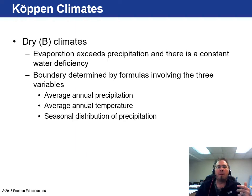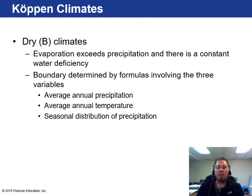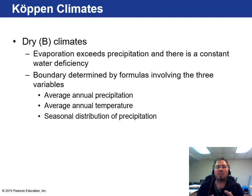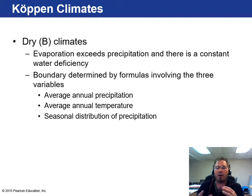Now let's turn to dry climates, where evaporation exceeds precipitation, creating a constant water deficiency. There's not enough water to sustain everything because it's evaporating and there's insufficient rainfall. Boundaries for these areas are defined by average annual precipitation, average annual temperature, and seasonal distribution of precipitation. Even in dry climates, there can be a period with more rain than others. Some places on Earth, like the Atacama Desert, may not get a single drop of rain for 50 to 100 years, depending on their position relative to surrounding land masses and climate patterns.